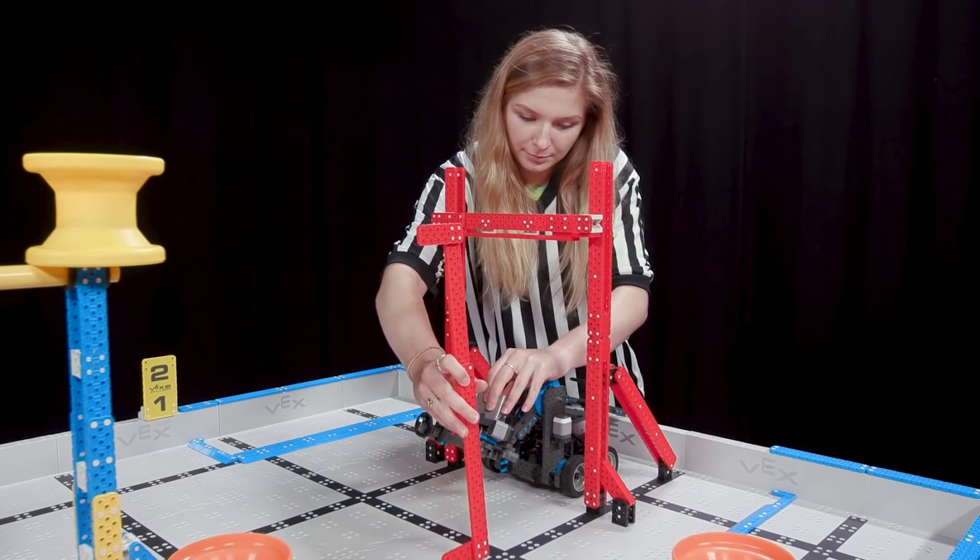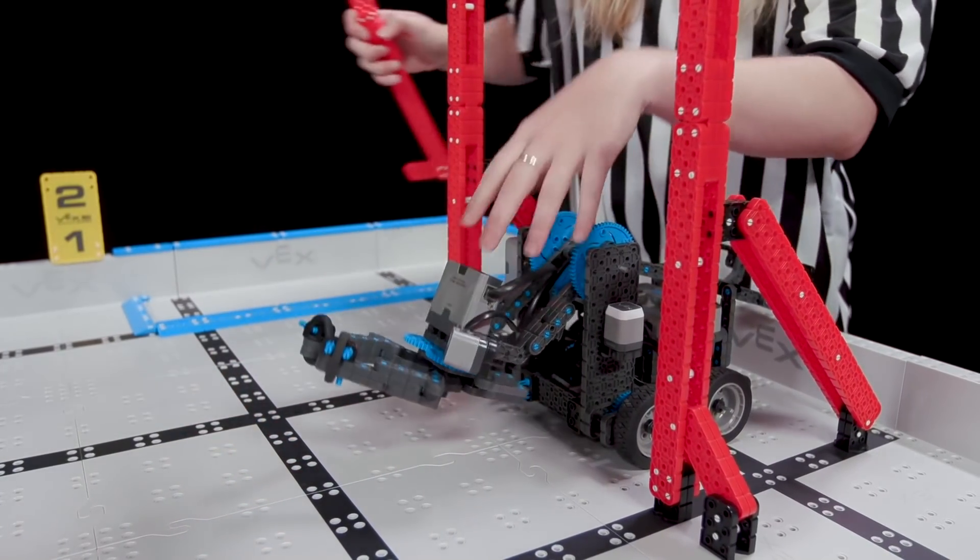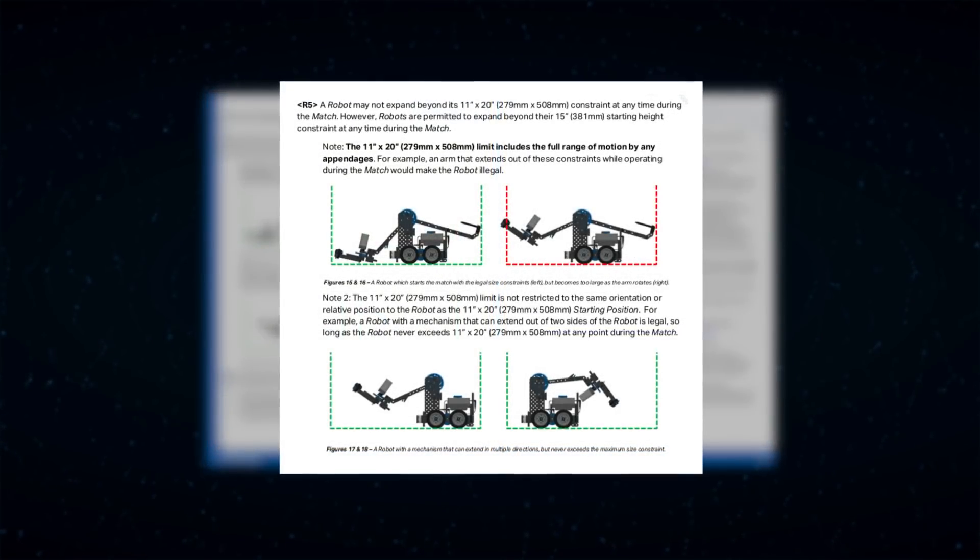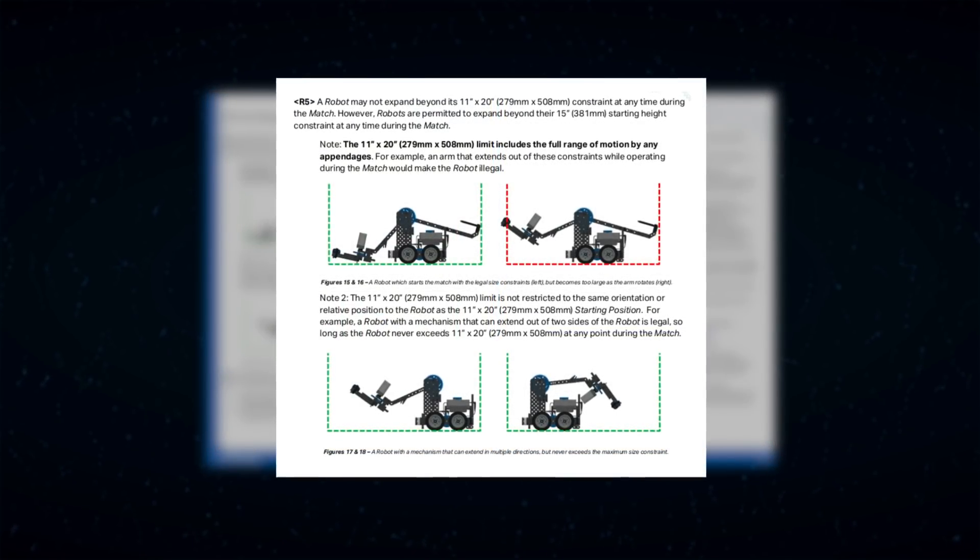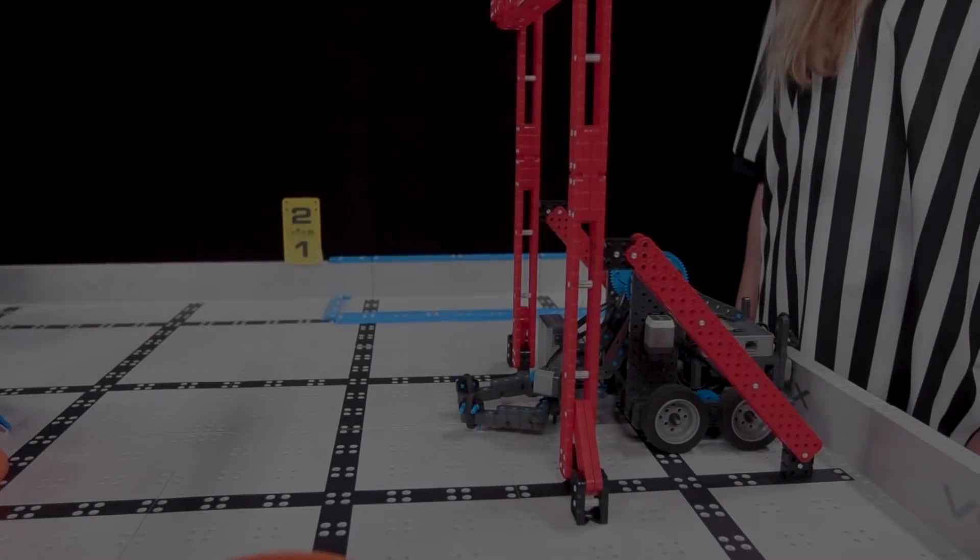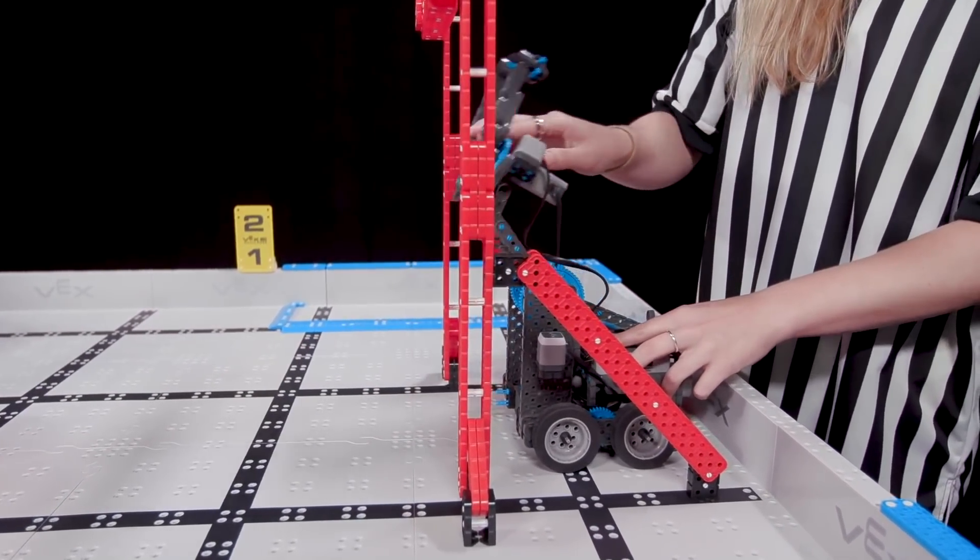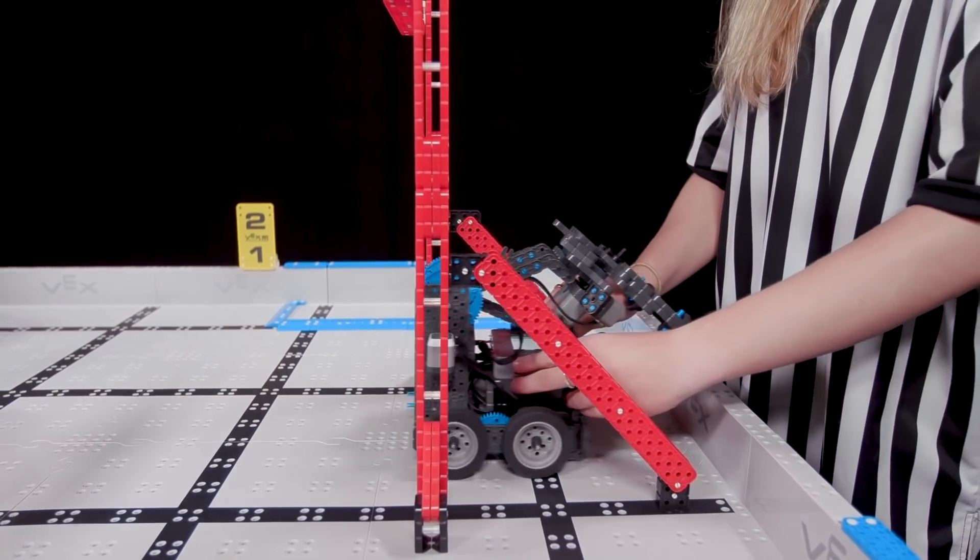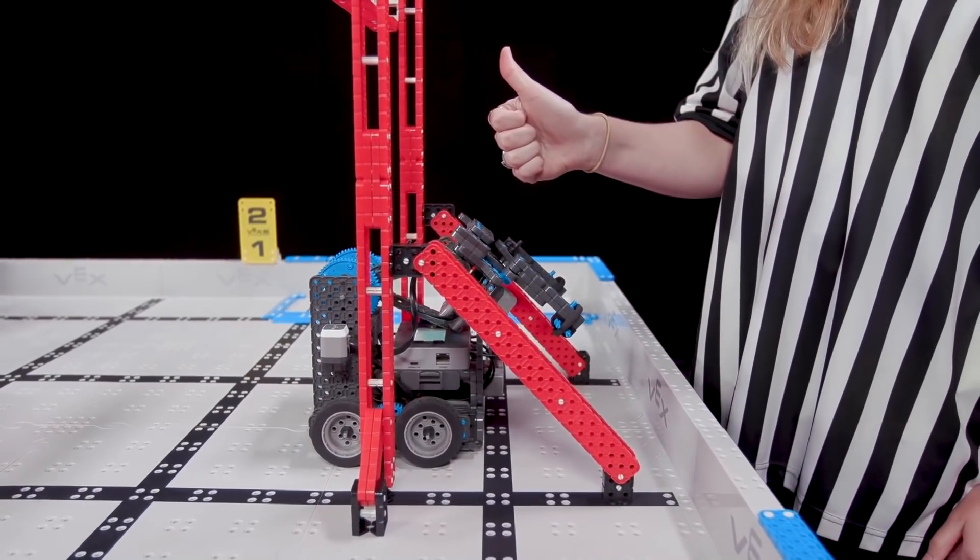This means that maximum horizontal sizes should also be checked during inspection. Pay close attention to the images found in R5 as well. It's important to note that this 11 by 20 inch horizontal area is not fixed. For example, if a robot has a mechanism which reaches out of the front and the back, this is okay, as long as it never exceeds 11 by 20 inches at any given moment.